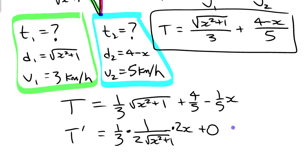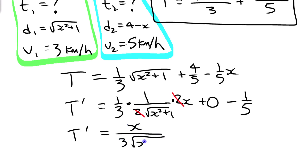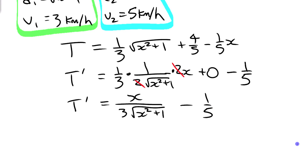Simplifying the first term, the twos cancel nicely, giving us x / (3√(x² + 1)) − 1/5. That's our derivative. Now we want to find where that derivative equals zero.